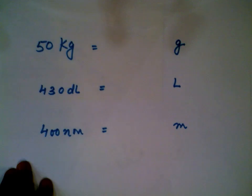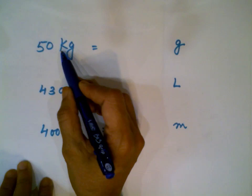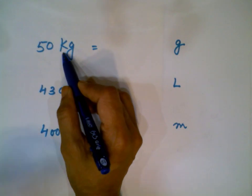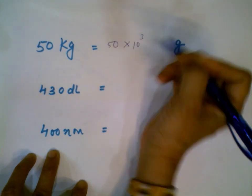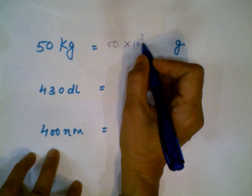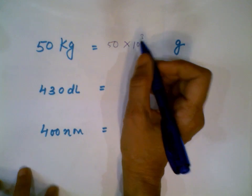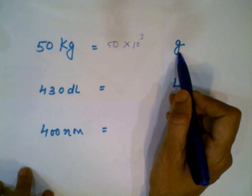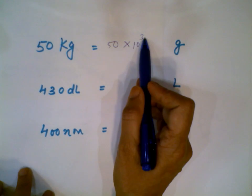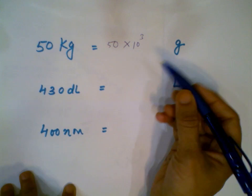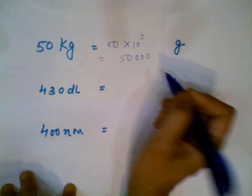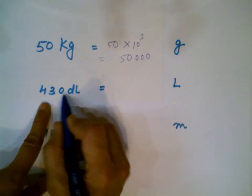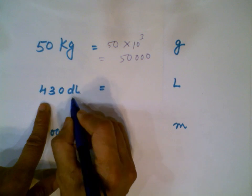Now let's do conversions using the prefix values instead of moving the decimal on the stair step. Kilo stands for 1000, which is 10 to the power of 3. For example, 50 kilograms: since kilo is the bigger unit and you're going to a smaller unit, you have a positive exponent. Move the decimal three places to the right, giving you 50,000 grams.